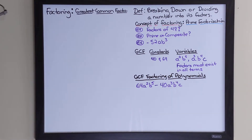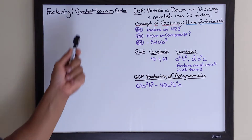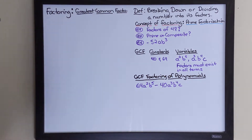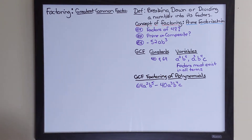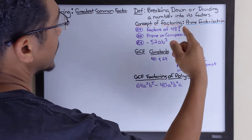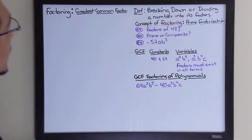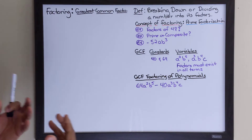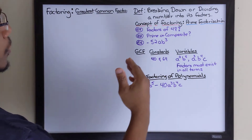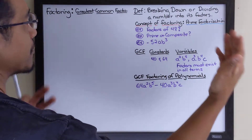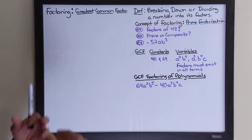Hello class. In this video we're going to talk about factoring, specifically the greatest common factor type of factoring. Before we get started, let's talk about what factoring is. Factoring is breaking down or dividing a number into its factors. To get the concept of that, we're going to go over what's known as prime factorization.